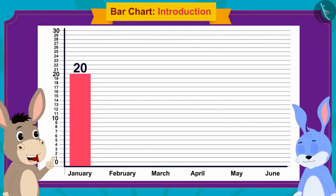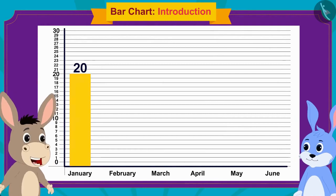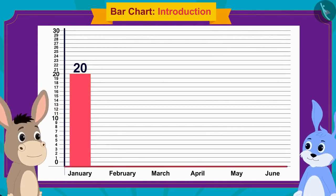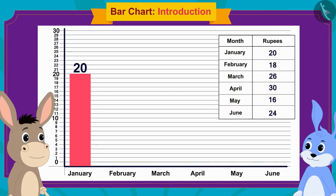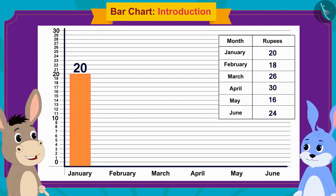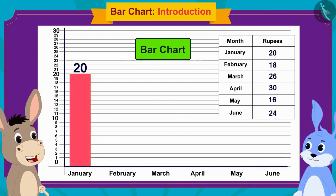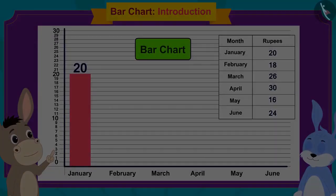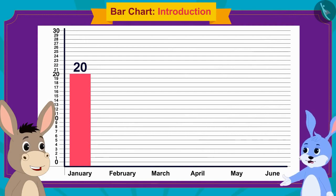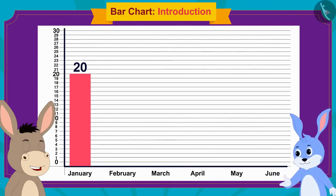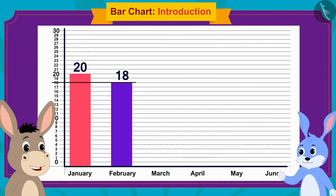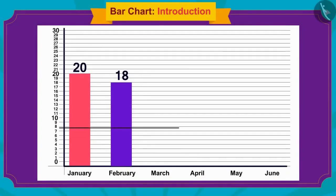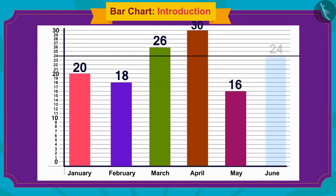Look, Bunny — we have to make thin rectangles on the horizontal line for the amount saved in each month, whose length will be the same as the amount saved in that month. Because these rectangles look like bars, we call this chart a bar chart. Now I will make a rectangle with a height reaching number 18 for the amount saved in February. Bunny and Bola together made rectangles for all months.